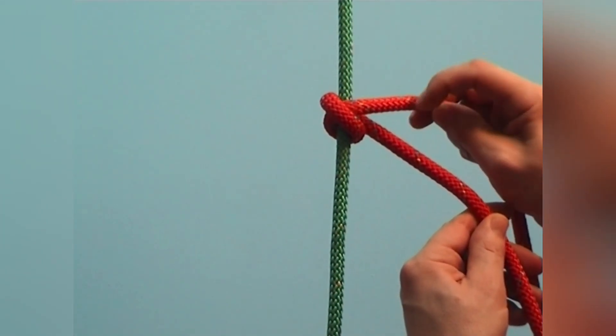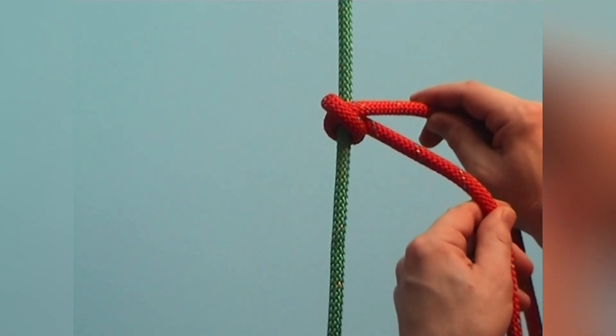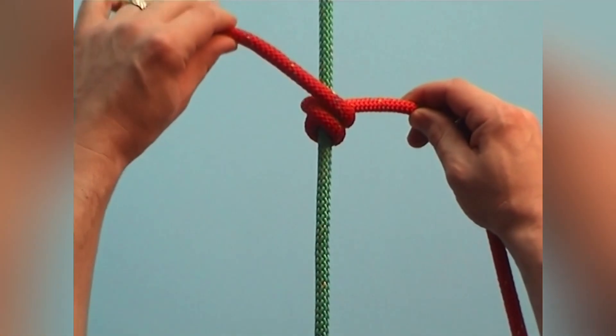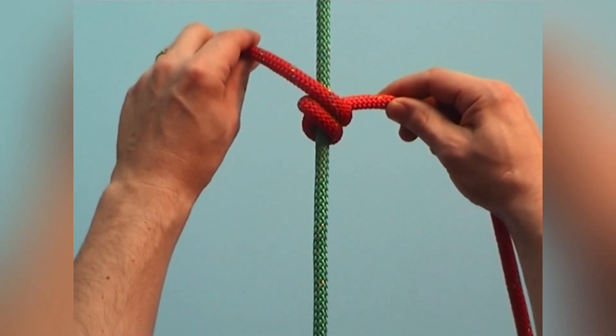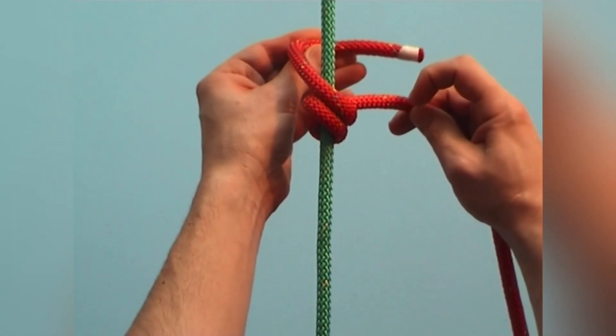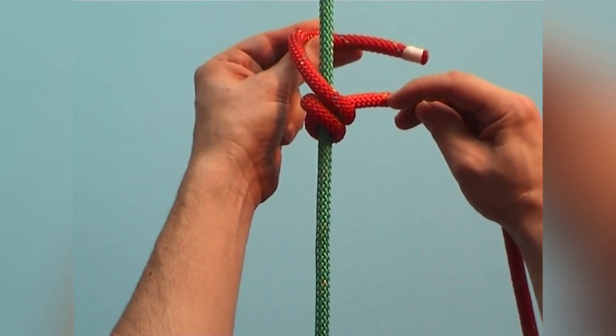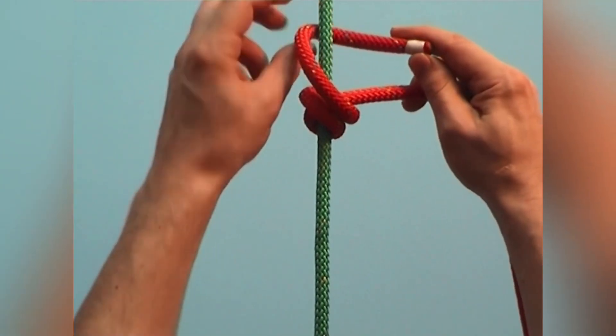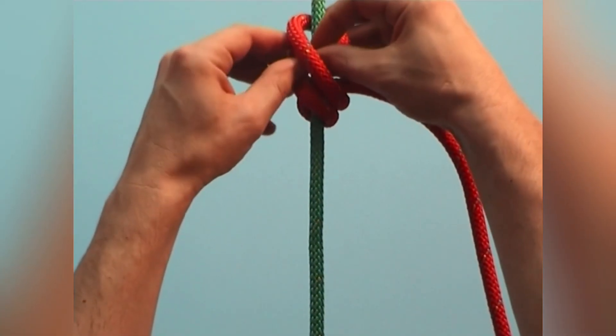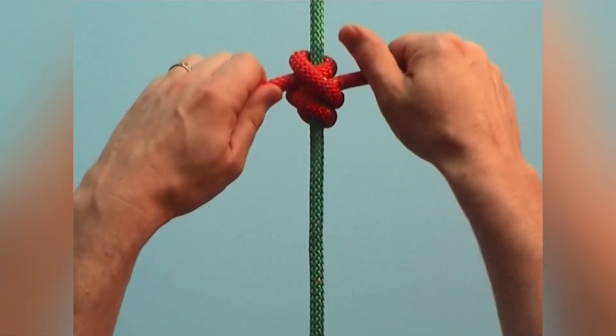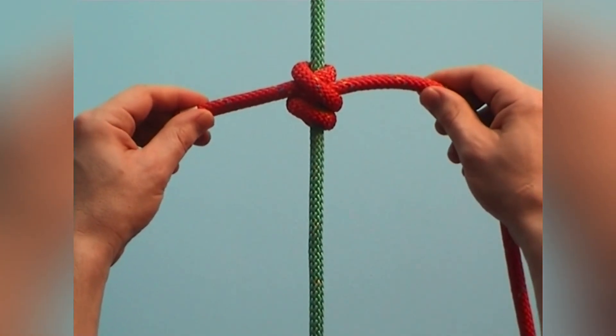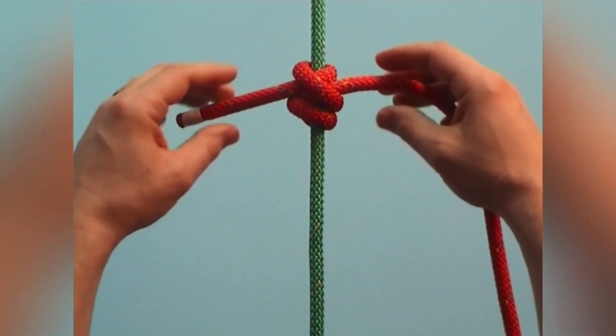Go around again in the same direction of rotation, but now to the other side of the standing part. And make a half hitch. Tighten the knot well.